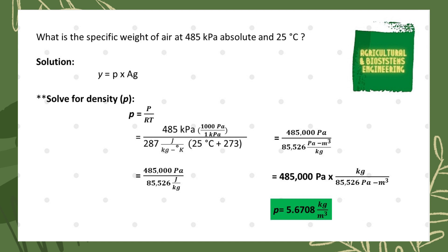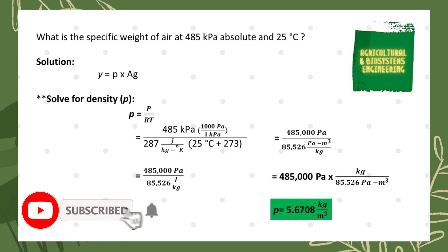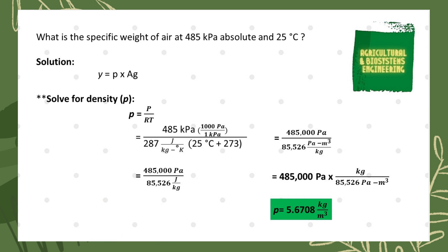We compute the result and our answer is 5.6708 kilogram per cubic meter. That is now the value for our density. With this solved value for density, we can now solve for our specific weight or unit weight.